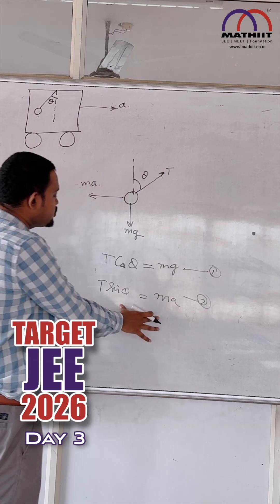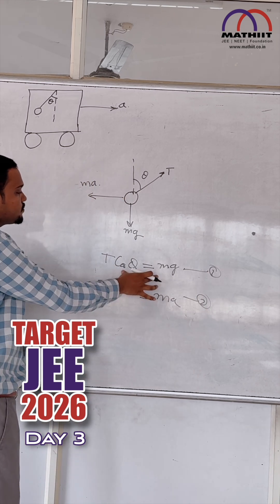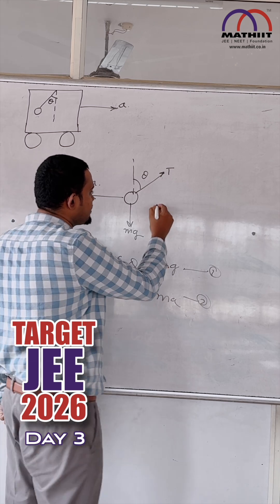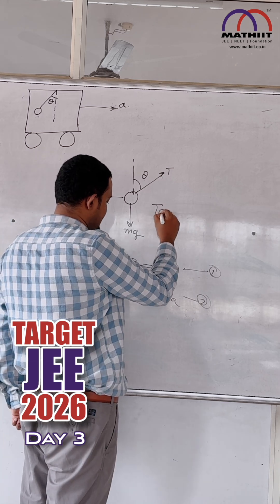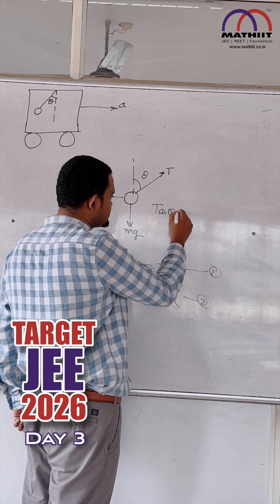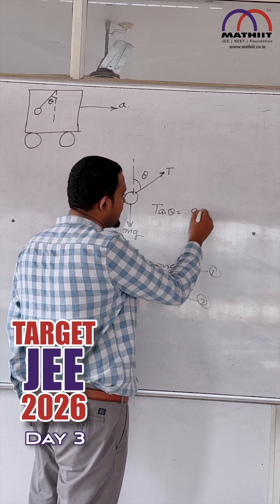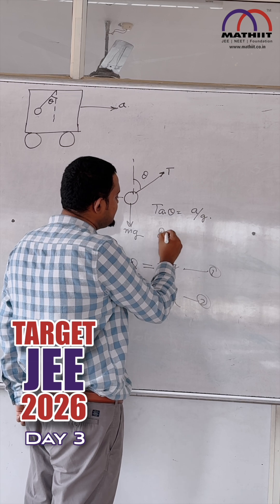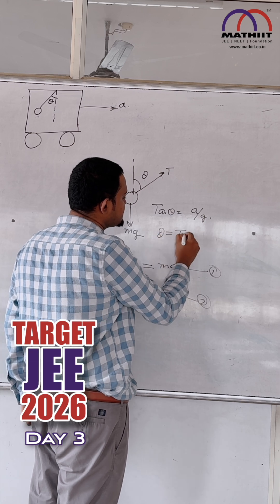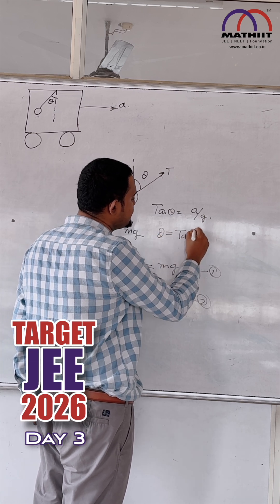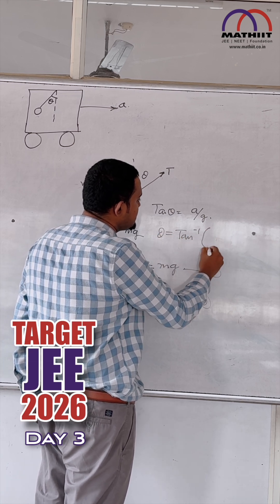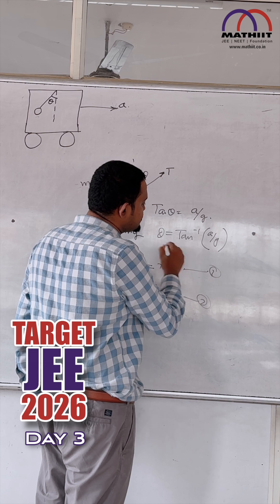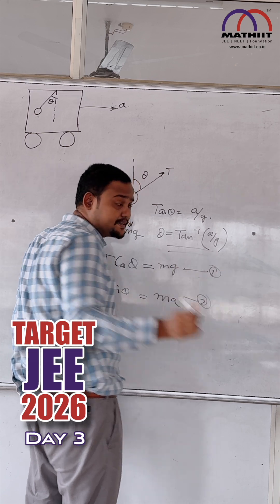We divide equation 2 by equation 1. What are we going to get? We are going to get tan theta is going to be equal to A by G. Or theta equals tan inverse of A by G. And this is your final answer.